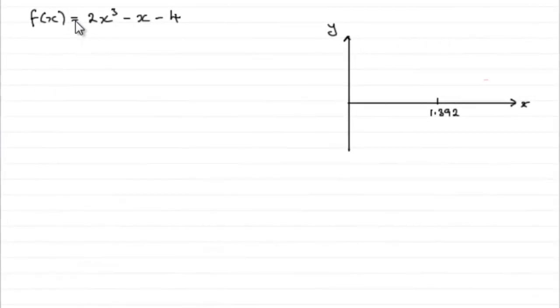Now in this last part, we're asked to show that when f of x equals 0, the root of that equation is going to be x equals 1.392 to three decimal places.